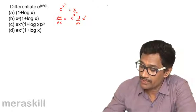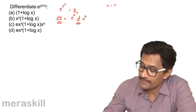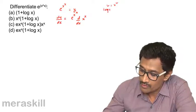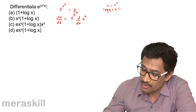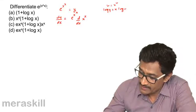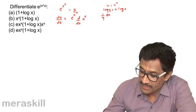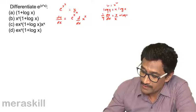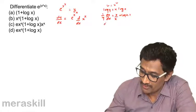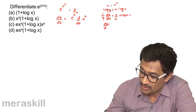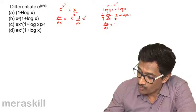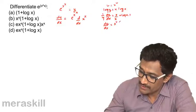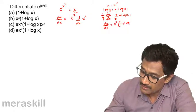To find d/dx of x^x, we let u = x^x, so log u = x log x. Differentiating: (1/u)(du/dx) equals x times (1/x) plus log x times 1, giving du/dx equals x^x times (1 + log x).